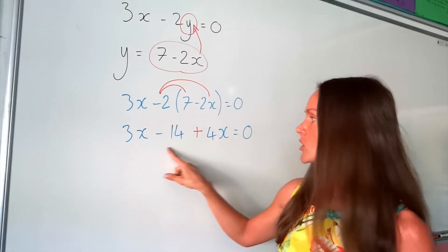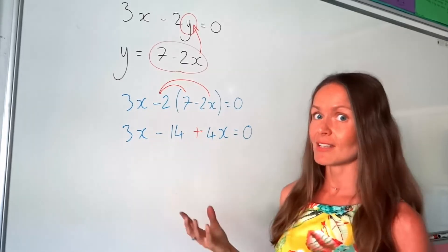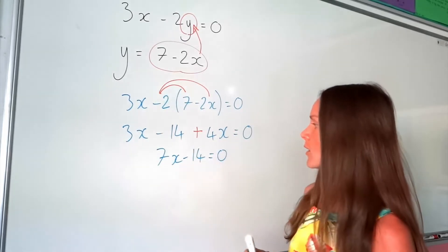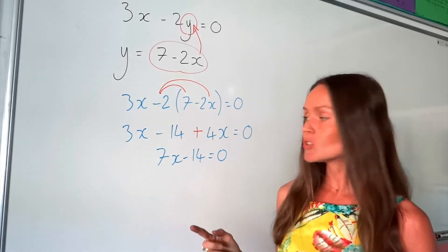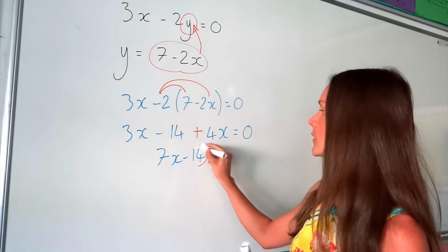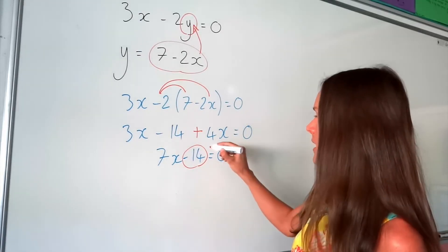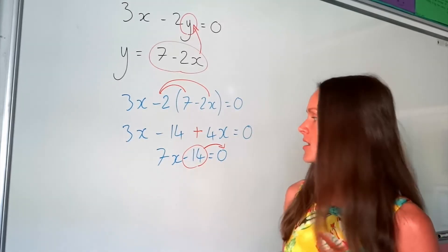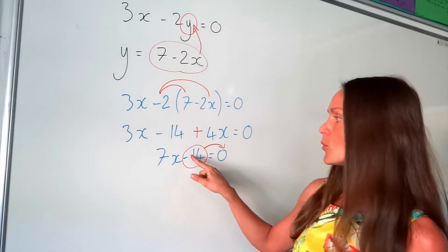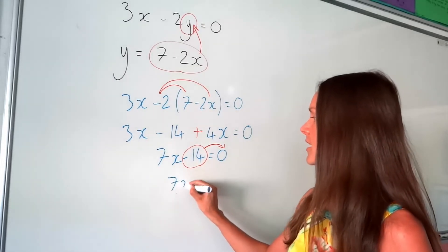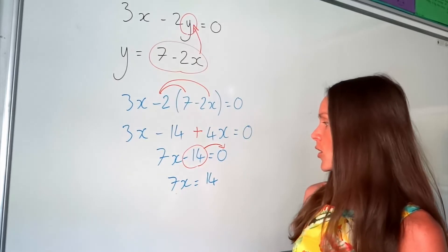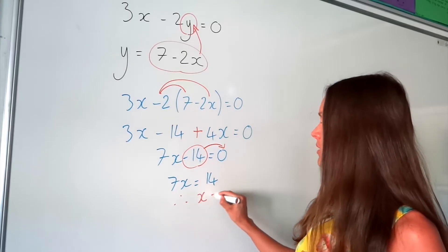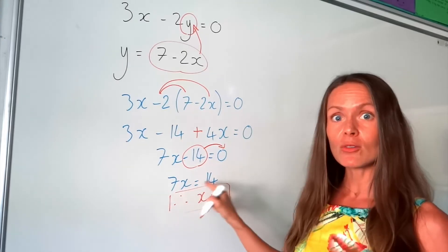And it gives me positive 4x. Now I'm just simplifying this equation, so I've got 3x plus 4x, which is 7x, not forgetting the negative 14 — it's still there. And now I need to solve this equation, so I need to get rid of this negative 14. When something moves across the equal sign, it changes sign. So this negative 14 will become a positive, and we've got 7x equals positive 14, which means x must be 2, because 7 times 2 is 14.